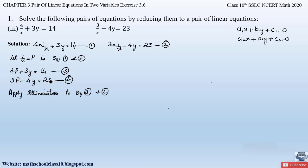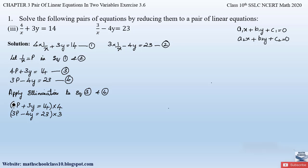To apply the elimination method, any one variable can be eliminated whose coefficients are equal with opposite signs. For the variable y we have opposite signs (+ and −) but the coefficients are not equal, so we need to make the coefficients of y equal. Multiplying Equation 3 by 4 and Equation 4 by 3 will achieve this.